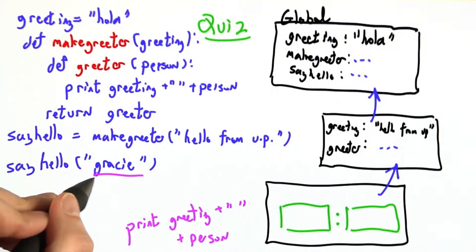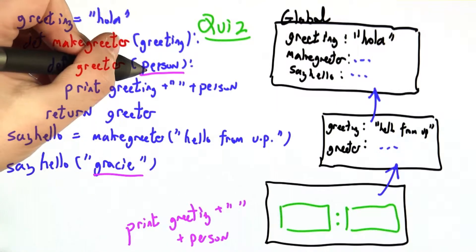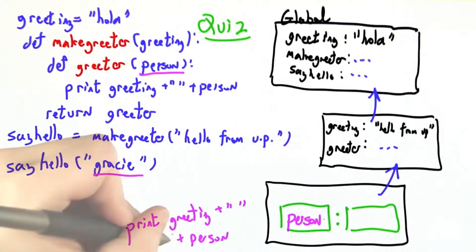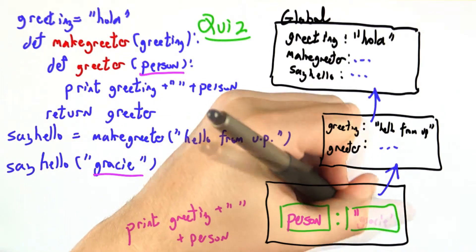We definitely want to make space for the formal parameters, person, and put in the value of the actual argument, Gracie.